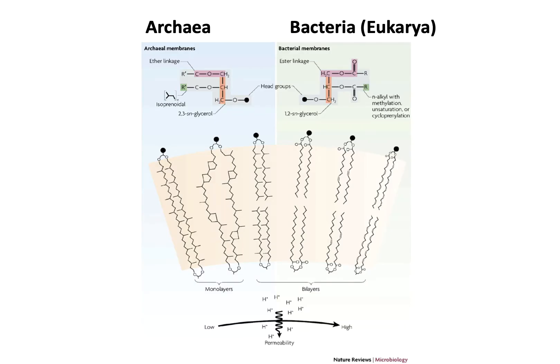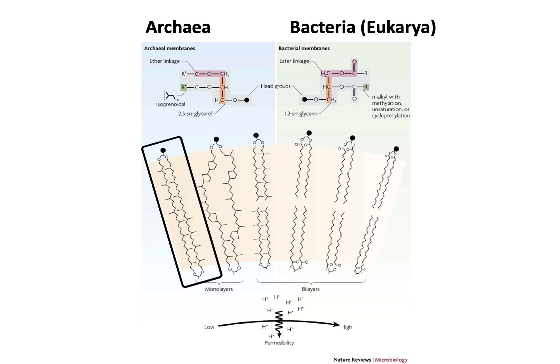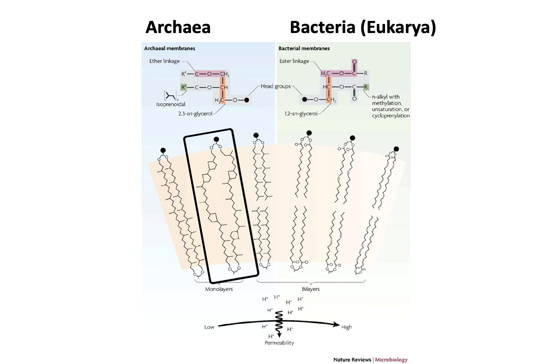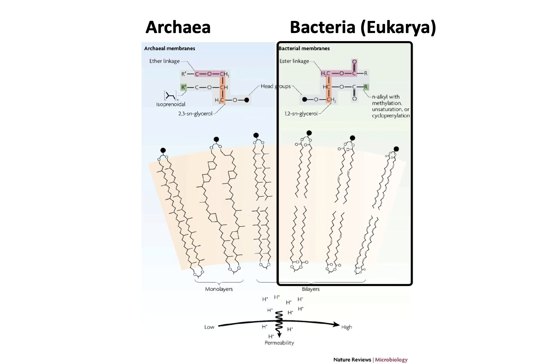In some archaea it's a monolayer, with the phospholipid spanning all the way through the membrane to the other side — and you'll notice it's not quite a phospholipid on the other end. They also have different branching chains, usually isoprenes. Some archaeal membranes are bilayers and some are monolayers with other unusual fatty acid groups. Bacteria and eukaryotes have a more standard cell membrane with two fatty acid chains attached through a glycerol by ester linkages.